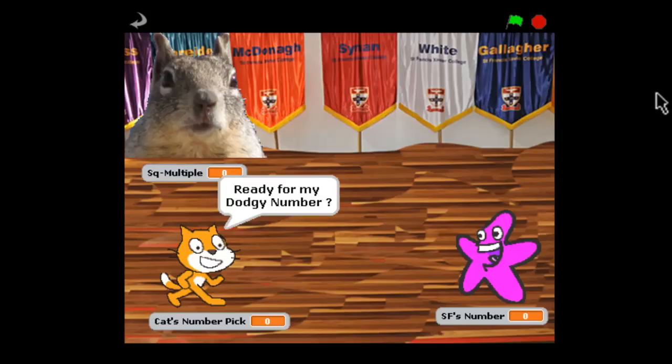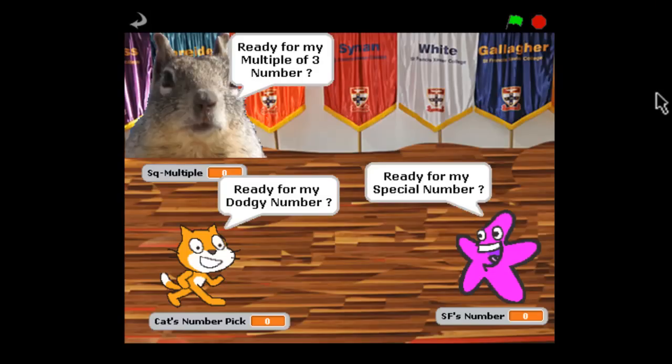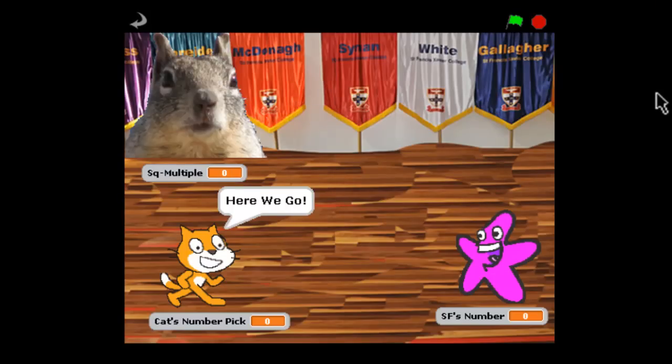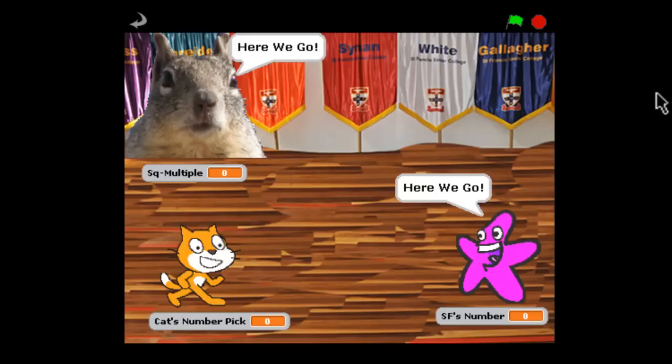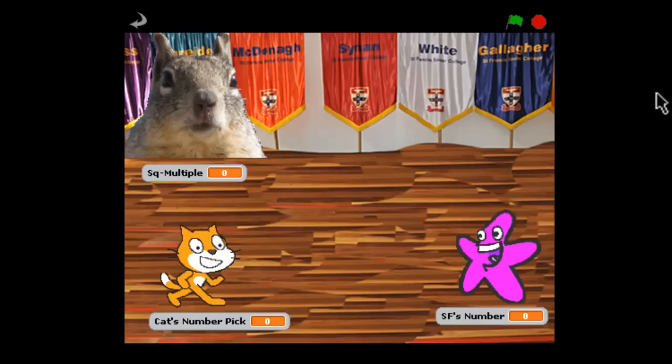This time the starfish has given us a whole number 7. We'll just go one more time with those guys because they should just keep picking different numbers because it is a random numbers program after all. So we've got 8, 6.5, and the squirrel's given us 27 which is in fact a multiple of 3.